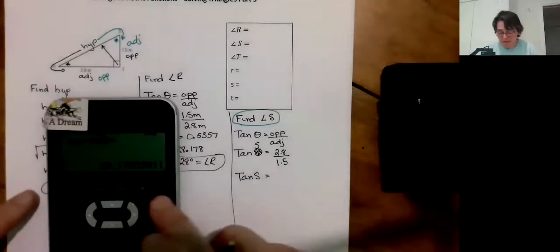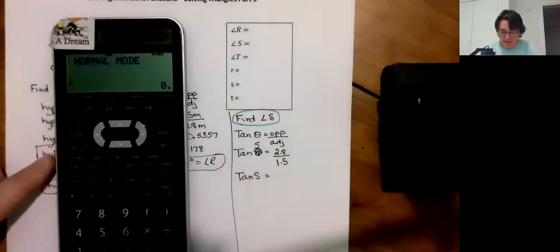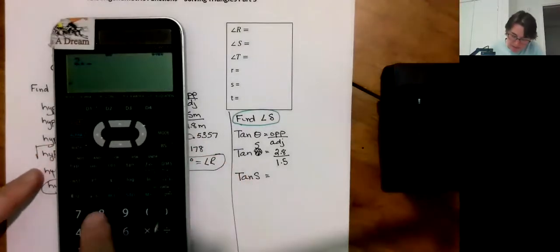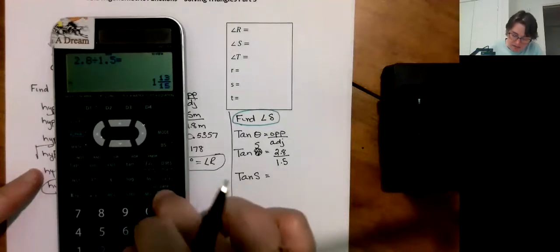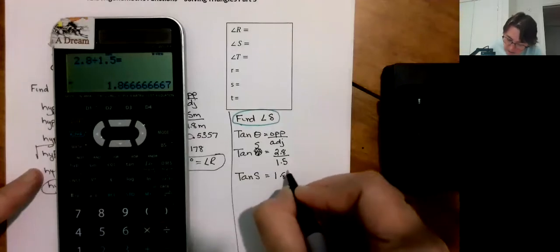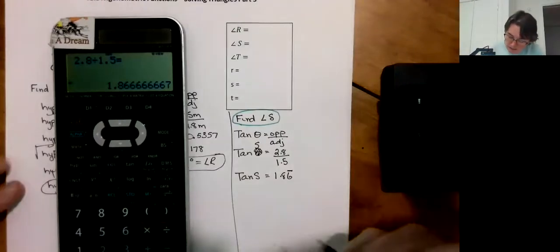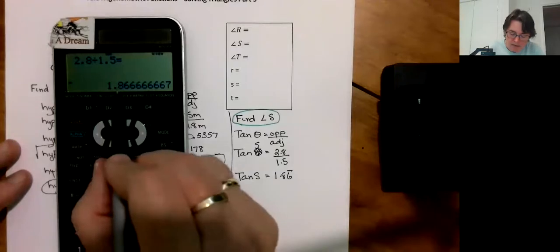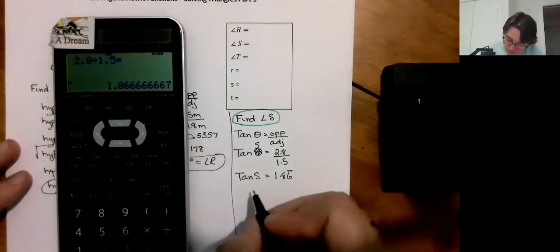And my number is going to be different when I do that division. 2.8 divided by 1.5. 1.86. Okay, if you guys were cool with that, I just put that repeating bar on there. And you could put 8667 if you wanted.